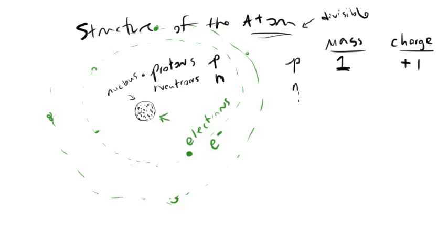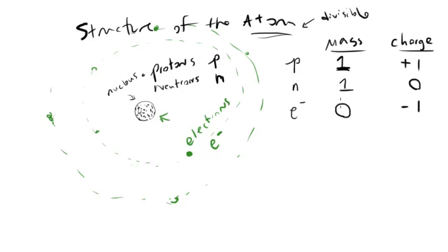The neutron, as you might expect from its name, is neutral, so it has a zero charge. It also weighs 1, the same as a proton. The electron has a charge of negative 1, so it balances out the proton. Its mass is not exactly zero, but for the purposes of calculating weights of atoms, we're going to call it zero — it's something like 0.0005.